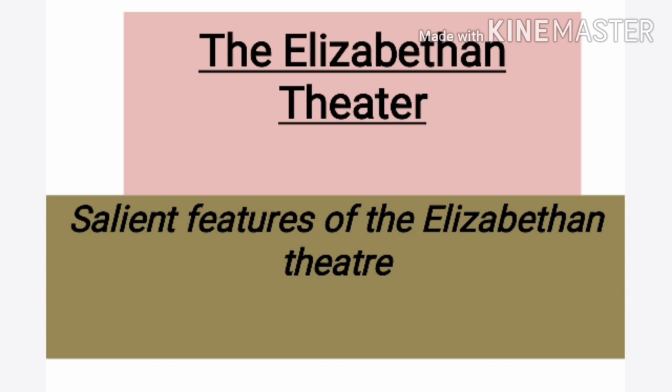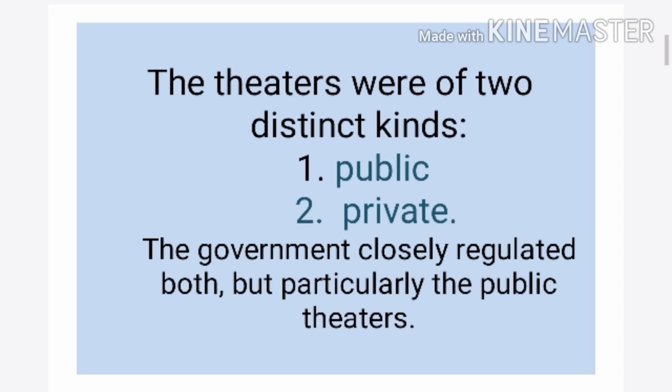Let's start the topic which is about the Elizabethan theatre. The theatres were of two distinct kinds: number one is public theatres and number two was private theatres. The government closely regulated both, but particularly the public theatres.